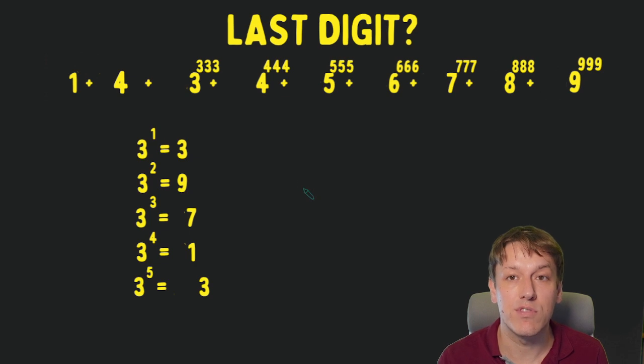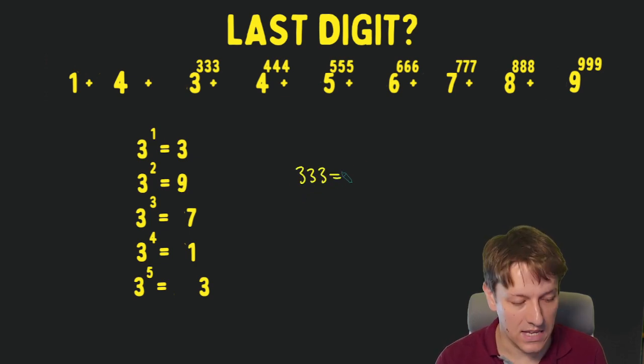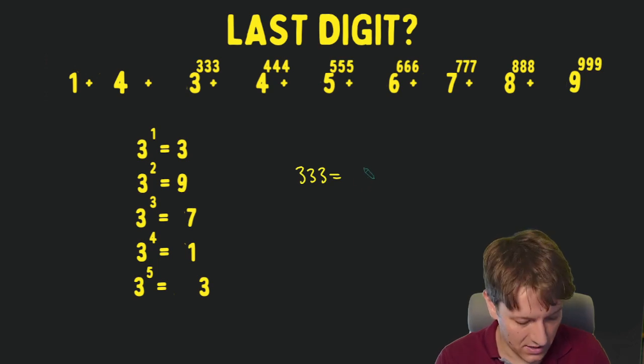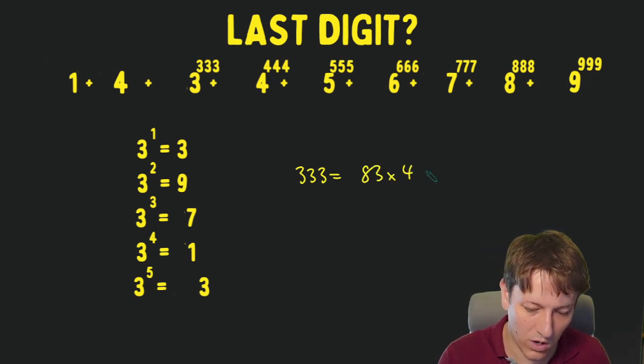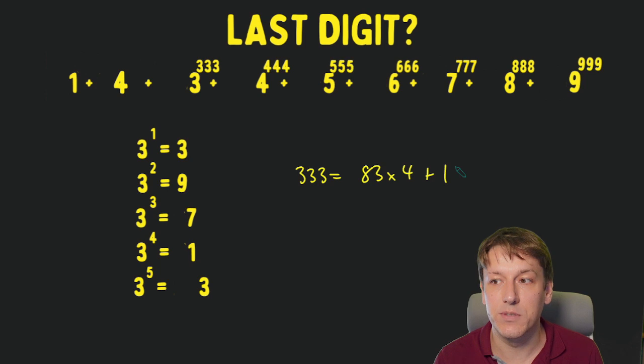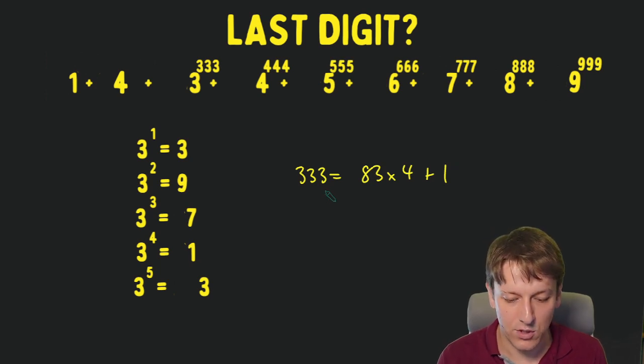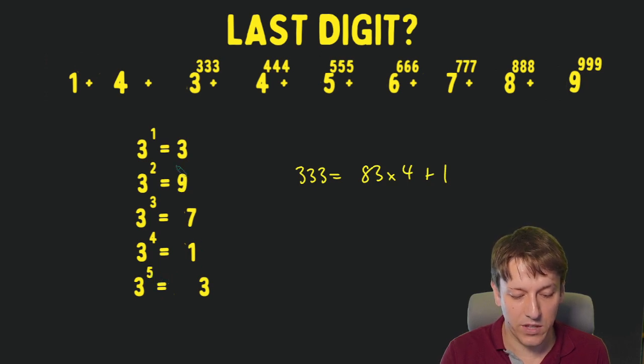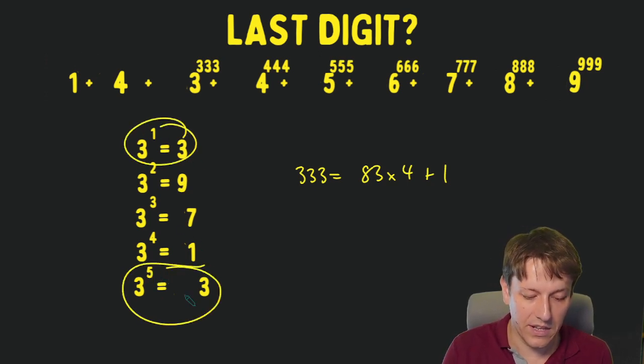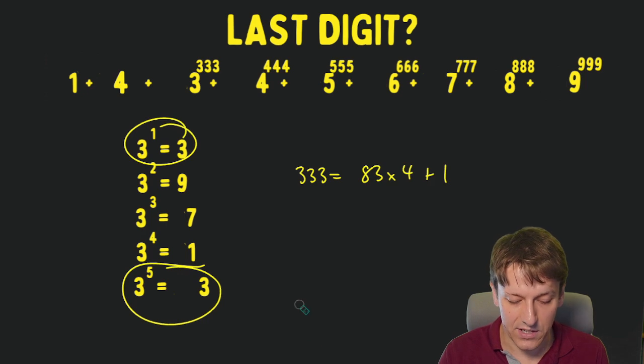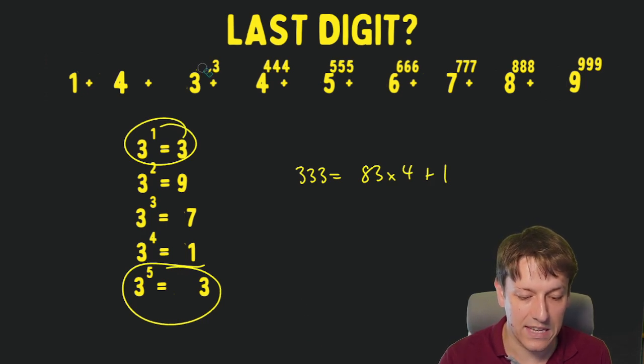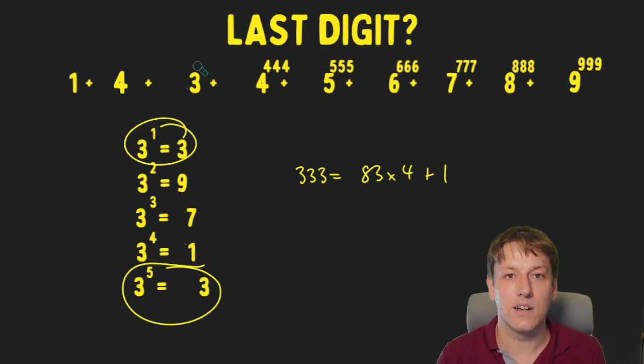So it's just a question of where 333 fits into this pattern. Now 333 is 83 times 4 plus 1, so it's 1 more than a multiple of 4, 332 being a multiple of 4, so it's got the same last digit as anything in this list where the power is 1 more than a multiple of 4, so the 3 to the 1 and the 3 to the 5. And so the last digit of 3 to the 333 is in fact 3.